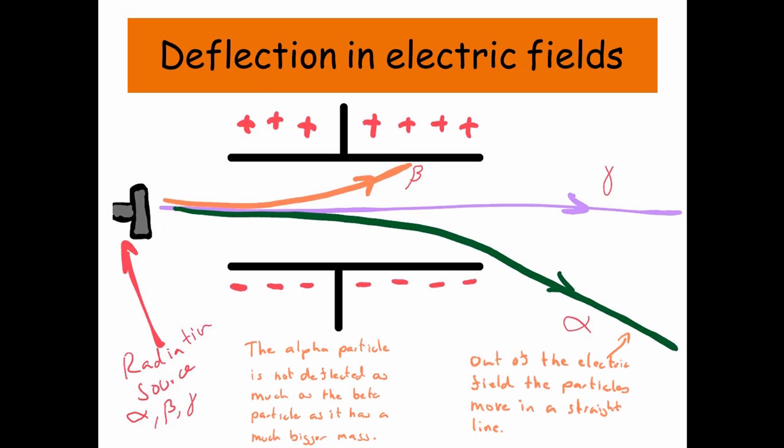Deflections in electric fields. Well, firstly, the beta particle, it's approximately 8,000 times lighter than an alpha particle.